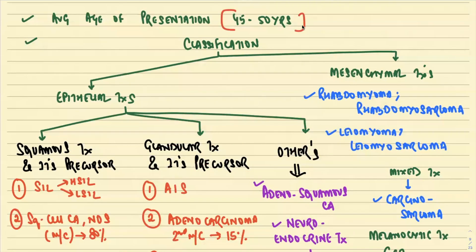The average age of presentation of cervical carcinoma is around 45 to 50 years. If sexual activity started at around 25 years, there is a 20-year gap — that is why we have developed the PAP screening process, which can effectively detect any precursor lesion and provide treatment for the same. Earlier, around 8 to 10 years back, cervical carcinoma was the most common carcinoma in women in our country, but today it is second most common — breast carcinoma is now the most common.